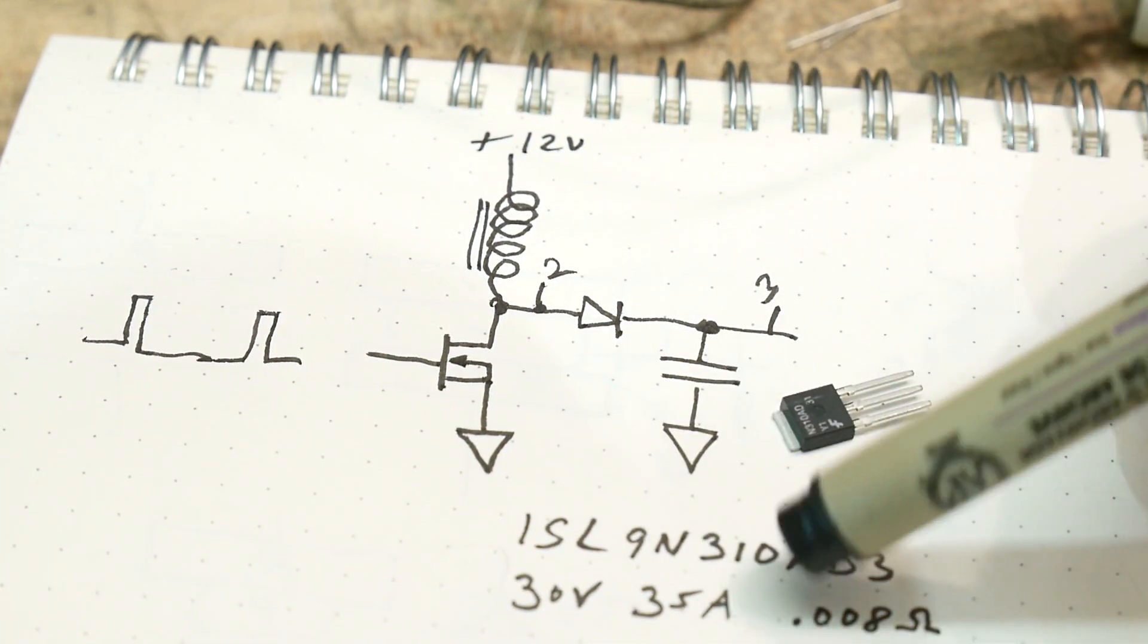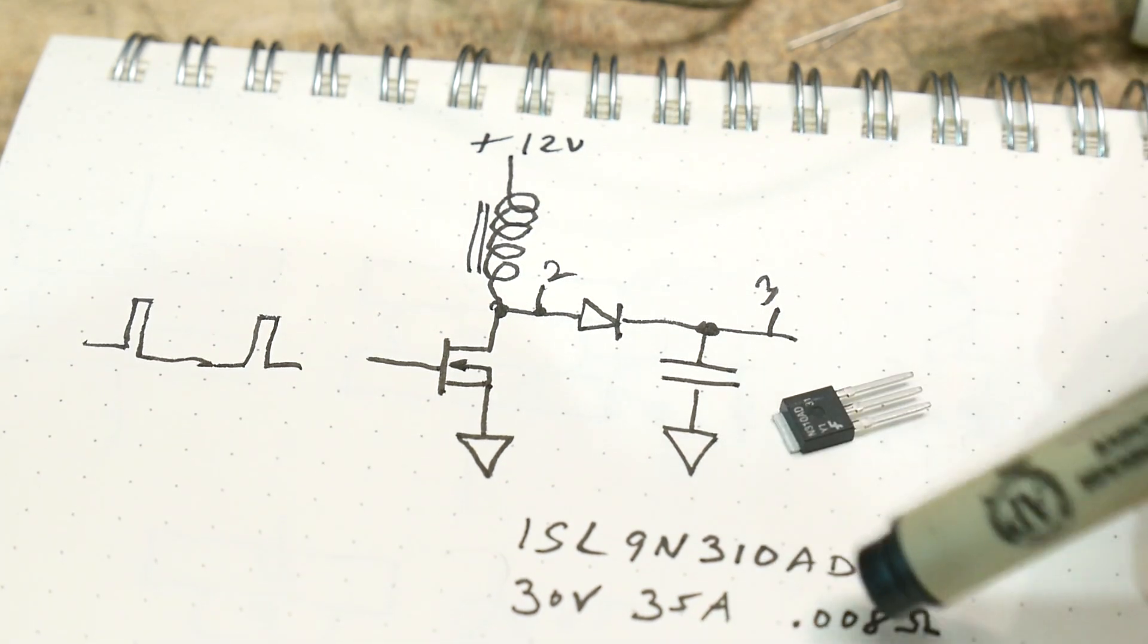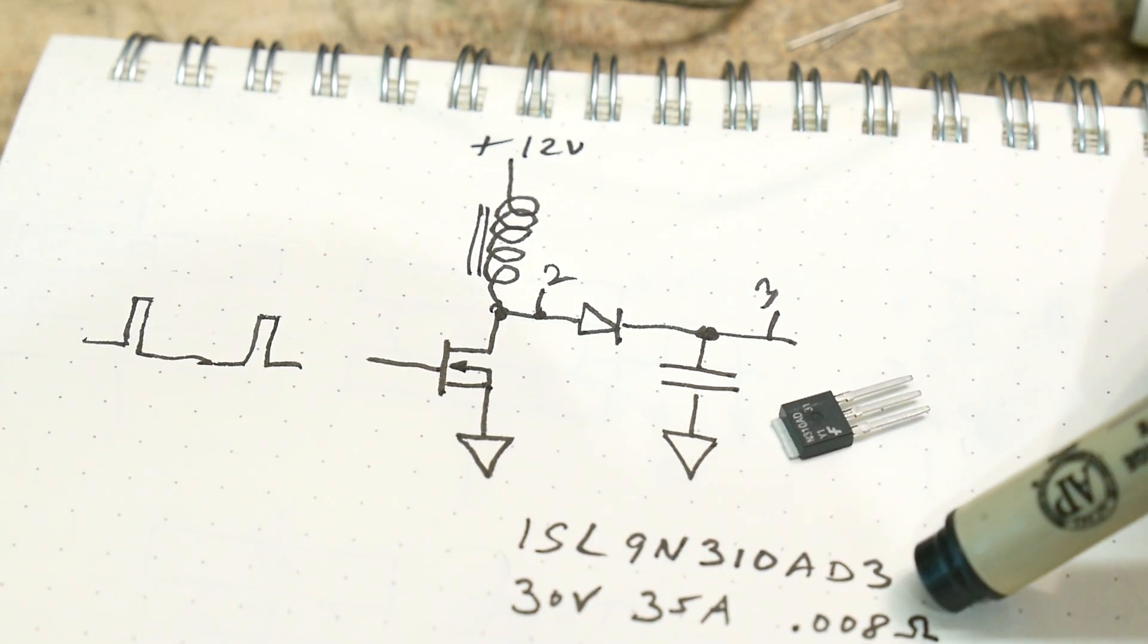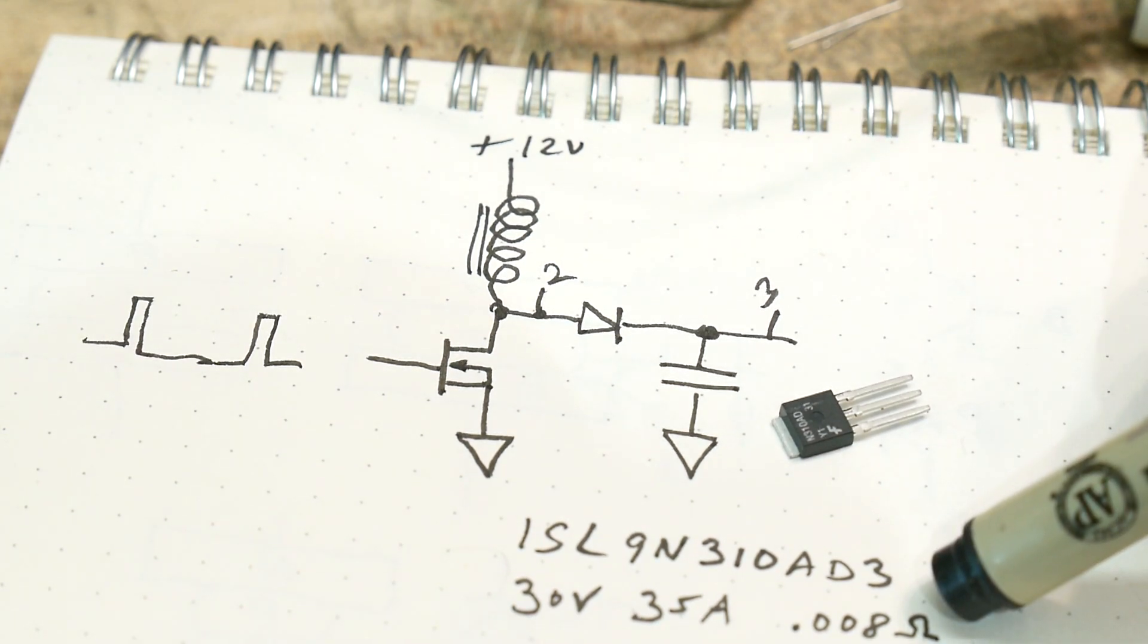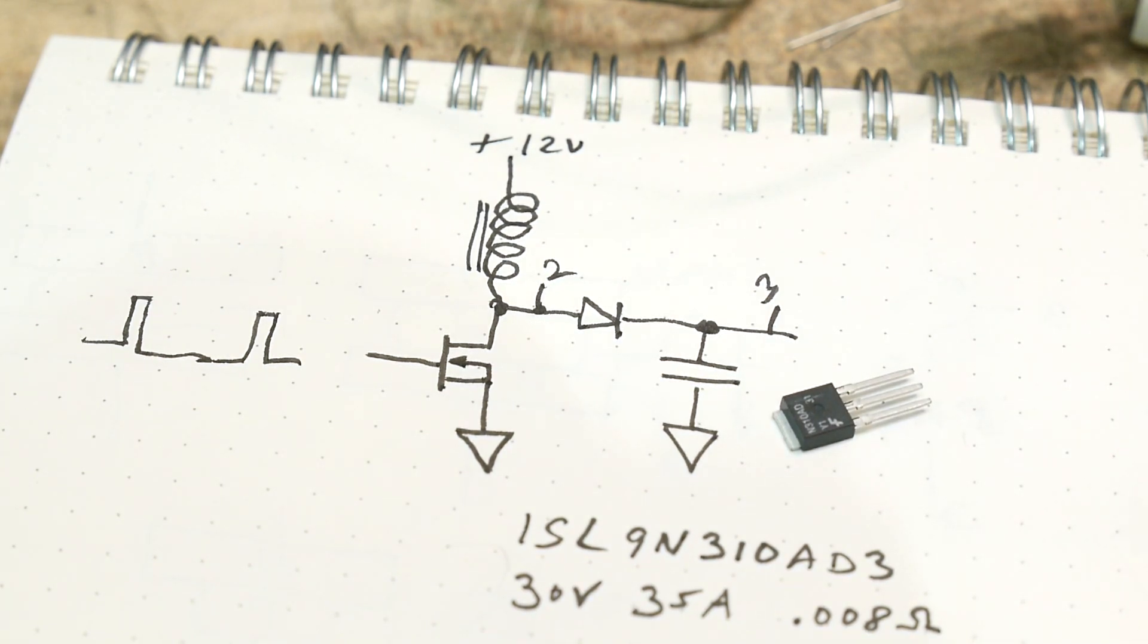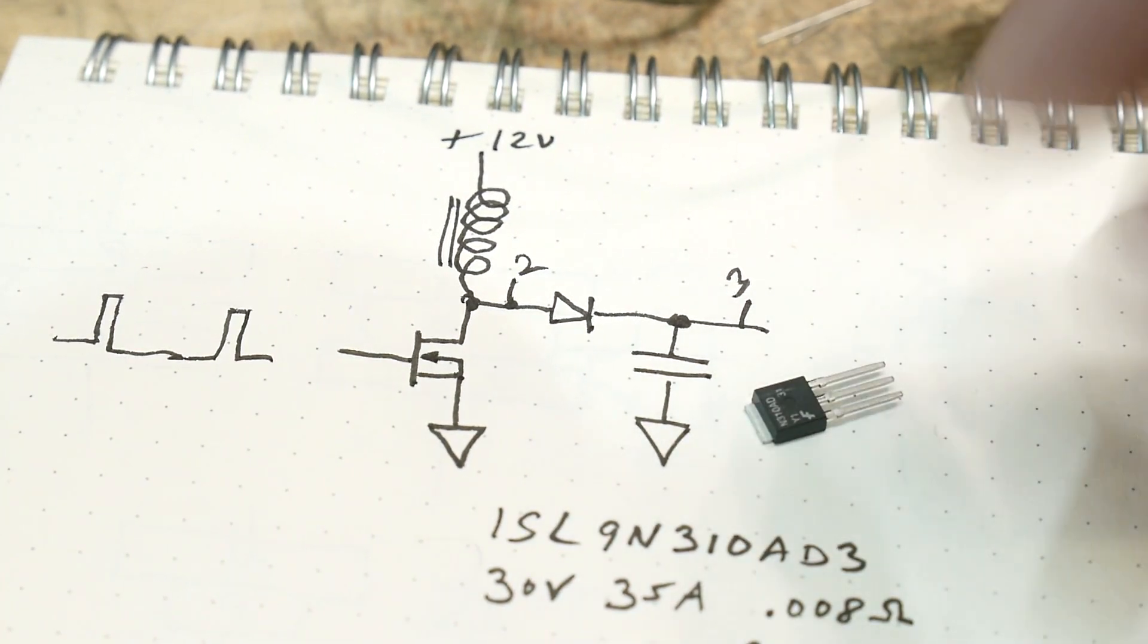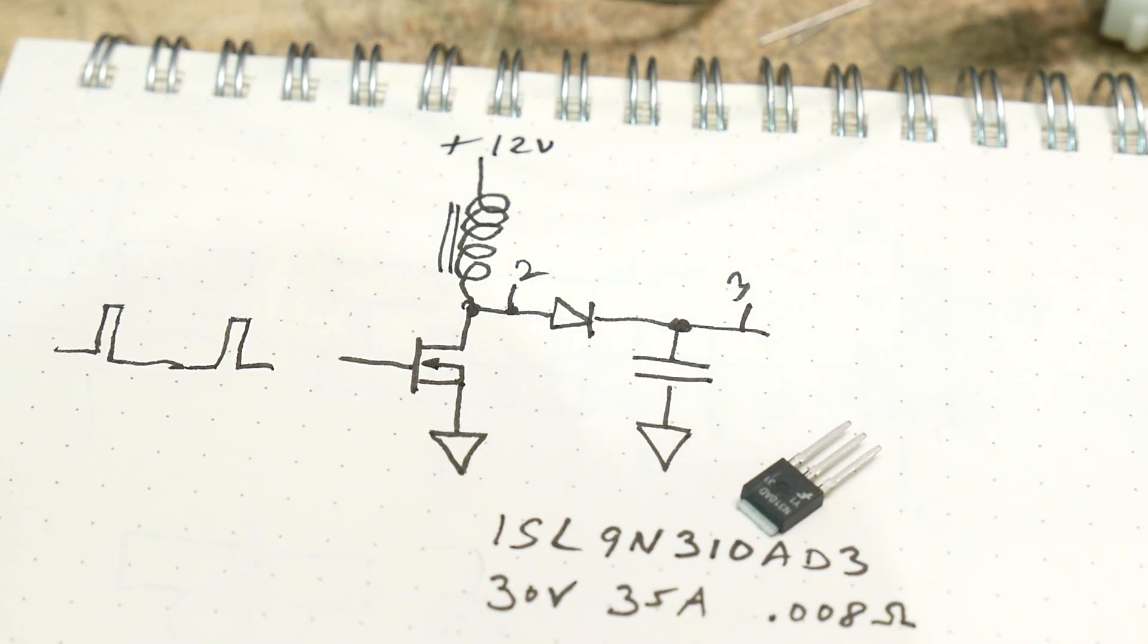30 volts at 35 amps, that's pretty good all by itself. And then 0.008 ohms on-resistance. That's just nuts, that's a really good one. So it's just a tiny little package, you think like how do you get any power out of that thing? How's that going to work?